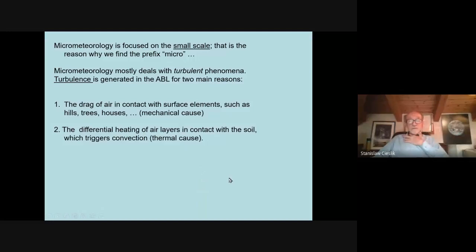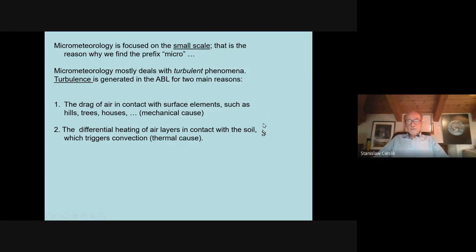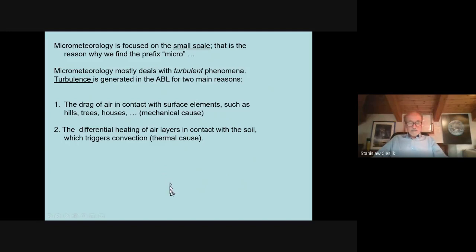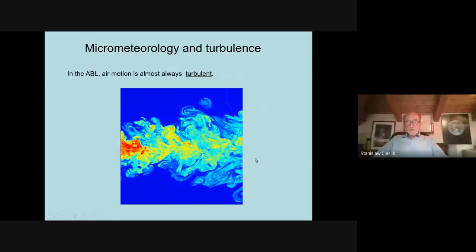Micrometeorology is focused on the small scale, and that's why it's called micrometeorology. In the boundary layer, practically all variables are turbulent. Turbulence exists for two main reasons: first, the mechanical one — because of the drag of air in contact with roughness elements like trees, hills, and houses (and one spoke about moving roughness elements like cows). Second, the thermal cause — differential heating of air layers in contact with the soil, which triggers convection.